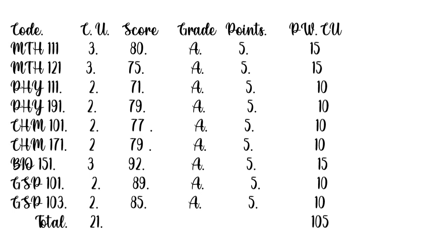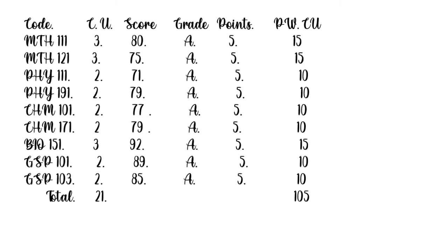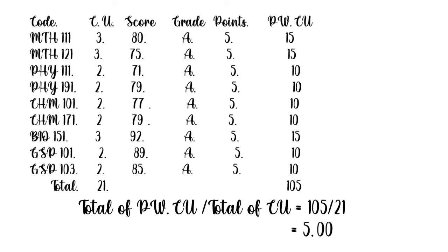Now after that, you add up all the credit units — you have 21 credit units total. If you add everything: 2 plus 3 plus 3 plus 2 plus 2 plus 2 plus 2 plus 3 plus 2 plus 2, you get a credit unit of 21. Now if you add your cumulative grade score and credit unit, you have a total of 105. For you to calculate your CGPA, you divide your grade score times credit unit by your total credit units — which is 105 divided by 21. People that have a parallel A will come up with a CGPA of 5.0.